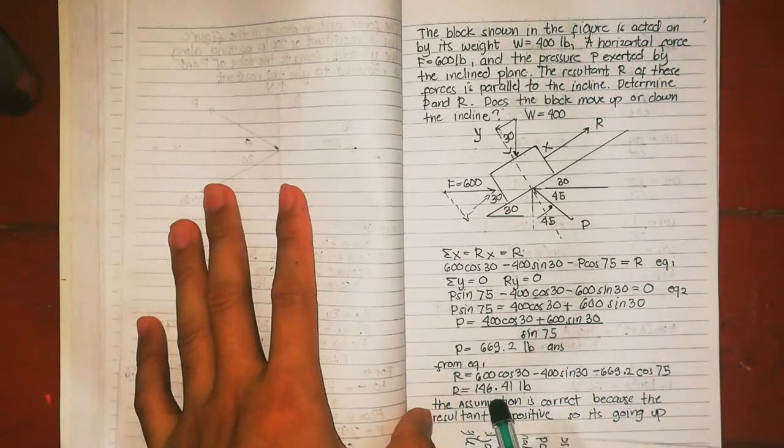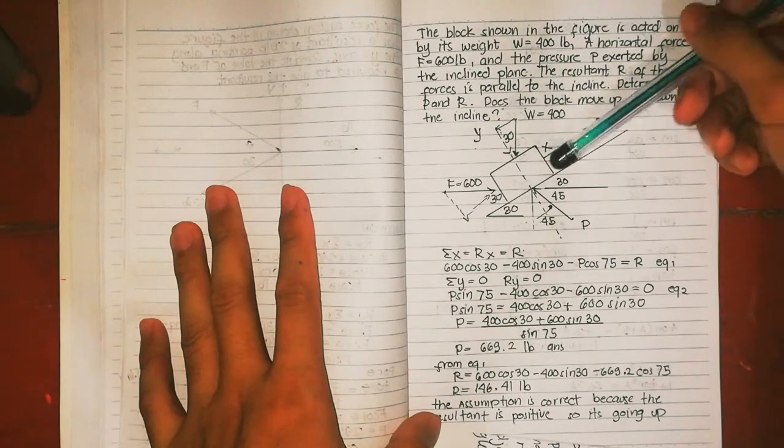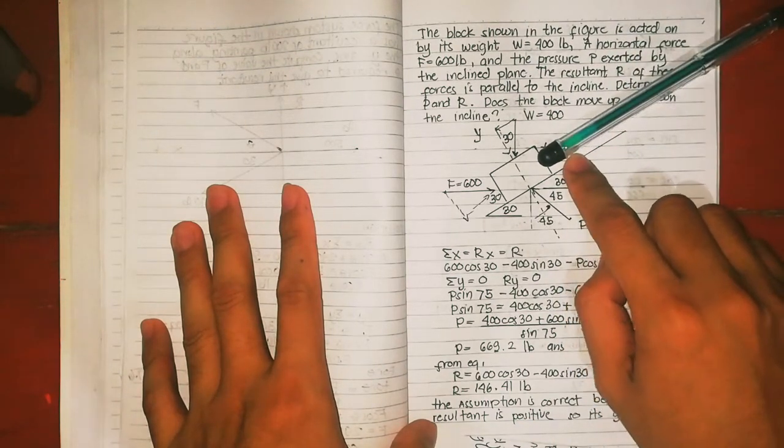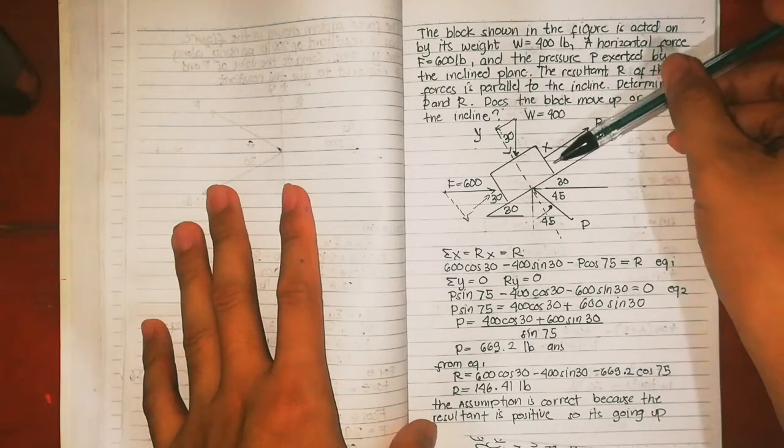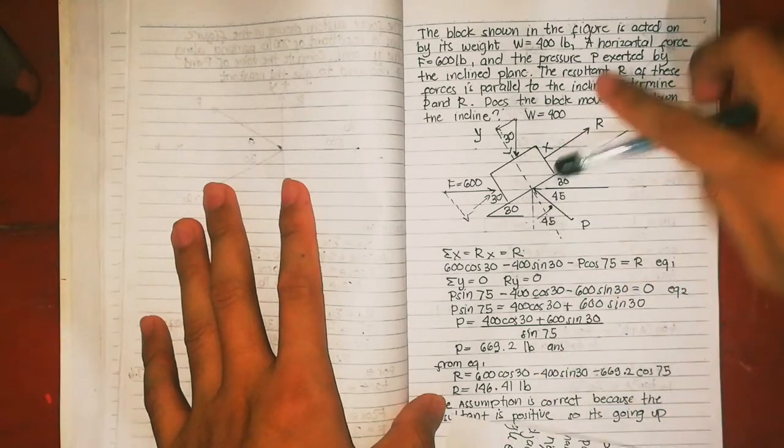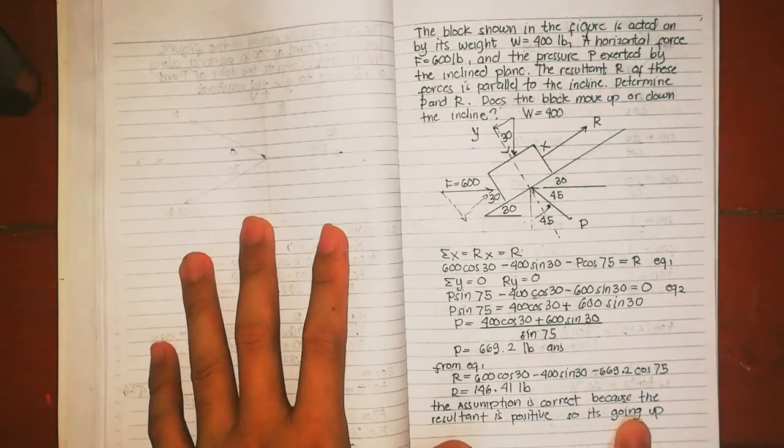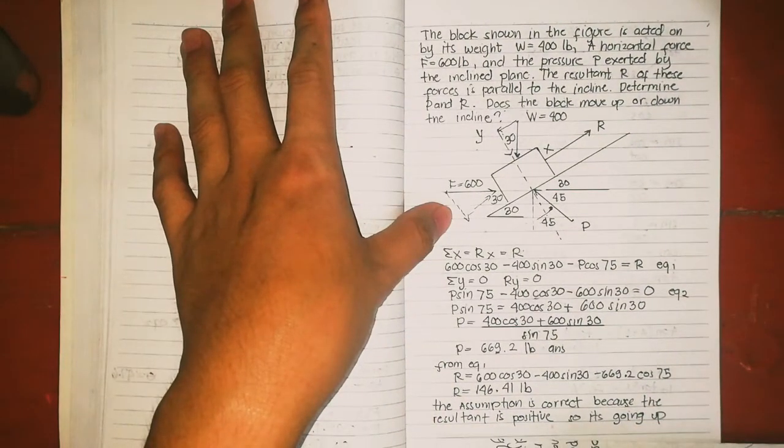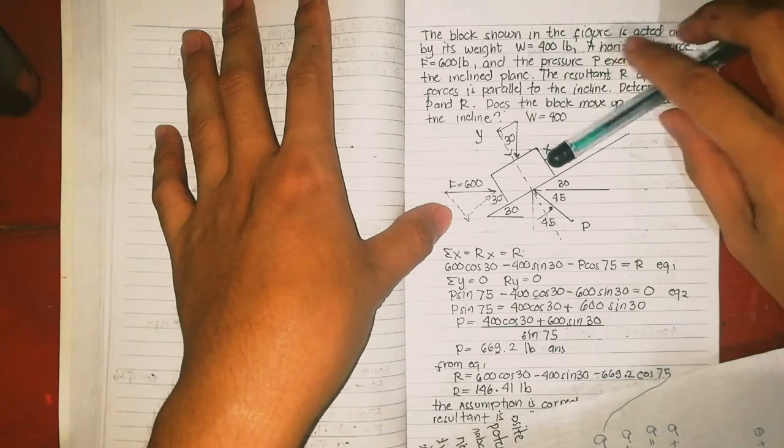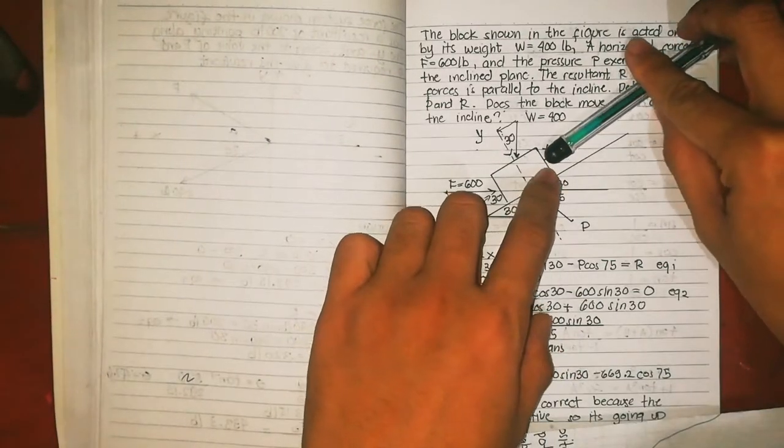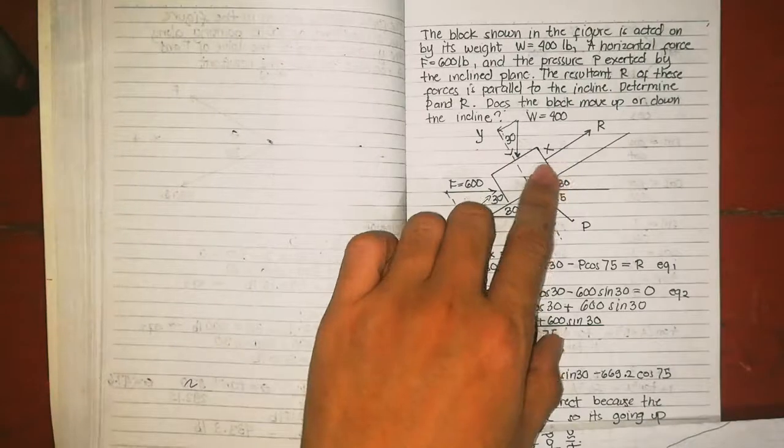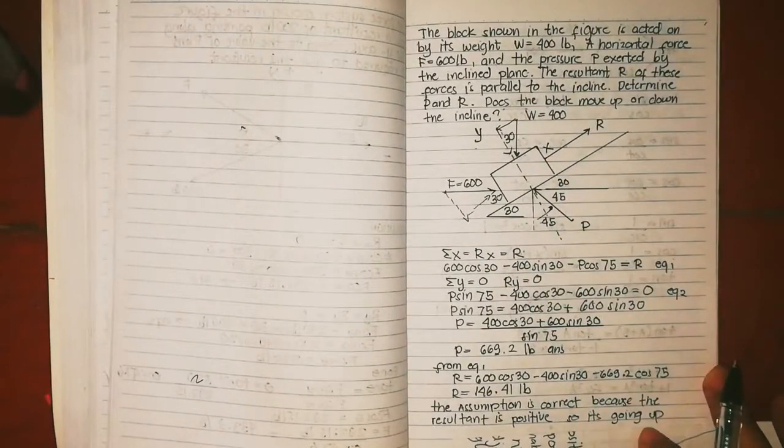Positive means our assumption is correct. I just assumed this going upward. If your result is positive, meaning your assumption is correct. If the resultant is negative, meaning your assumption is wrong, the resultant should be downward. But since in this problem it's positive, it means my assumption is correct that it's going up, so the box is going up. That's how to assume resultant or force. When you assume a force like this, then you compute and the result of the force is positive, meaning your assumption is correct. If the result is negative, meaning your assumption is wrong, it should be reversed, it should be downward. But since it's positive, meaning going up, the assumption is correct.